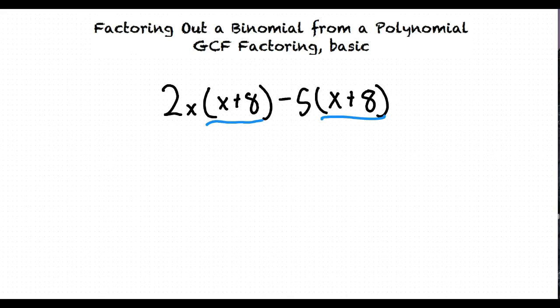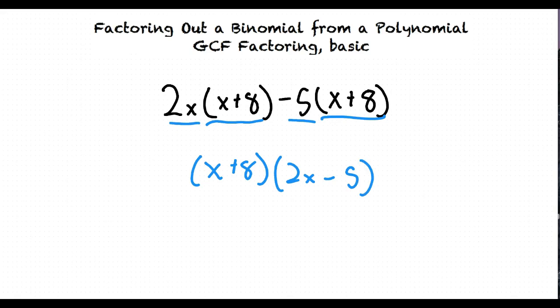Once the (x plus 8) is factored out, we get (x plus 8) times (2x minus 5) — 2x from the first term and minus 5 from the second. And that is our answer.